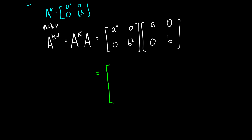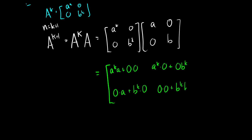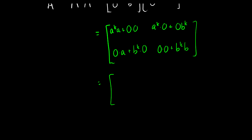For matrix multiplication, we multiply [a^k, 0; 0, b^k] by [a, 0; 0, b]. First entry (row 1 × col 1): a^k times a plus 0 times 0. Second entry (row 1 × col 2): a^k times 0 plus 0 times b. Third entry (row 2 × col 1): 0 times a plus b^k times 0. Fourth entry (row 2 × col 2): 0 times 0 plus b^k times b. Simplifying: first entry is a^(k+1), middle entries are zero, and the last entry is b^(k+1).